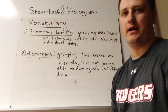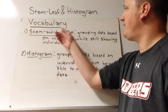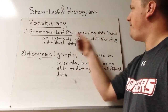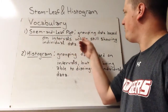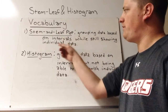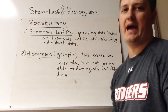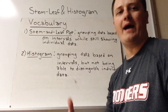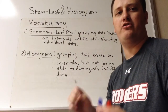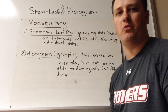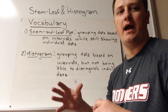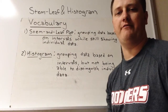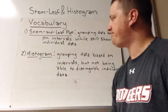Our vocabulary. Stem and leaf plot: grouping data based on intervals while still showing individual data. This is a way of graphing that shows the individual parts and groups them based off of some similarity.